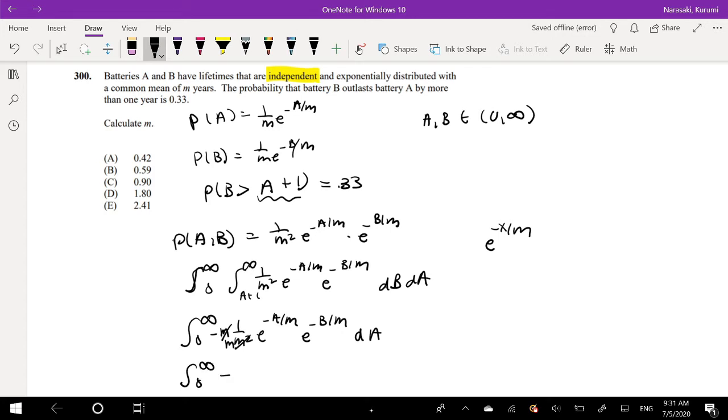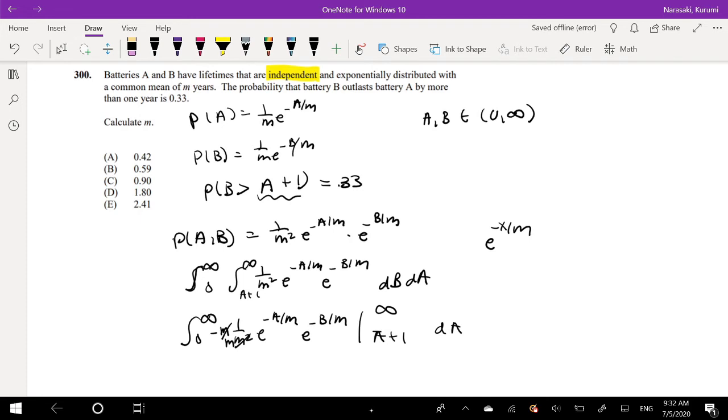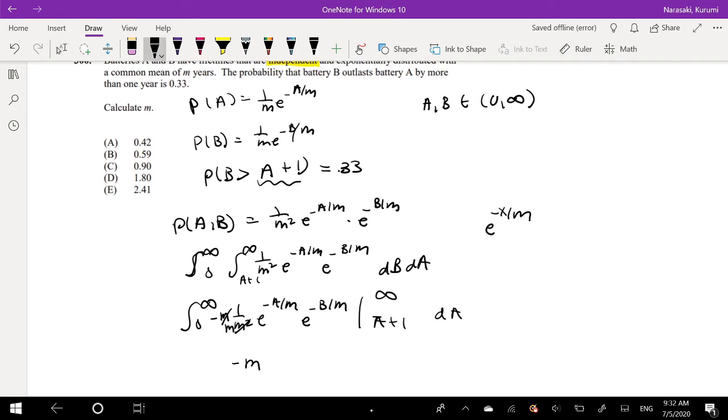As you notice, one of the M's cancel out, so you're left with just one M in the denominator. Let me rewrite this. I have to integrate this from A plus 1 to infinity. So the constant just stays the same. E to the negative B over M, I plug in infinity for B. E to the negative infinity is just 0, so that's 0 minus e to the negative A plus 1 over M.